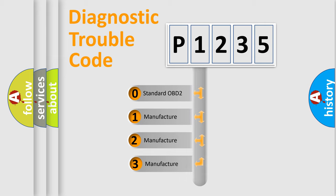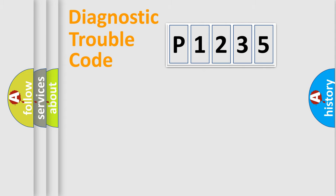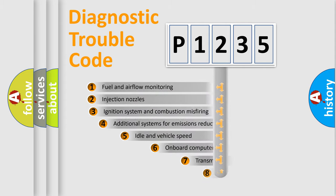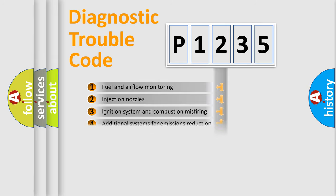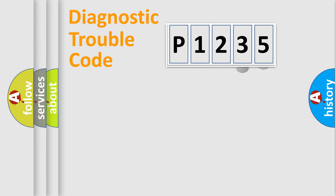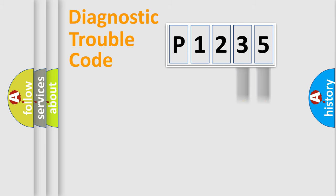If the second character is expressed as zero, it is a standardized error. In the case of numbers 1, 2, or 3, it is a more specific expression of a car-specific error. The third character specifies a subset of errors. This distribution is valid only for the standardized DTC code. Only the last two characters define the specific fault of the group.